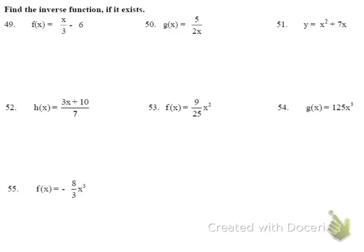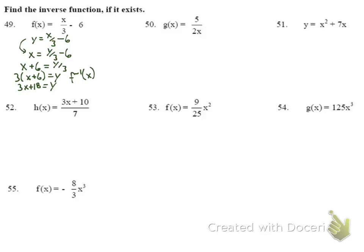For number 49, finding the inverse: write y = x/3 − 6, switch x and y, then solve for y. Add 6 to both sides: x + 6 = y/3. Multiply both sides by 3: the inverse of f(x) is 3x + 18.